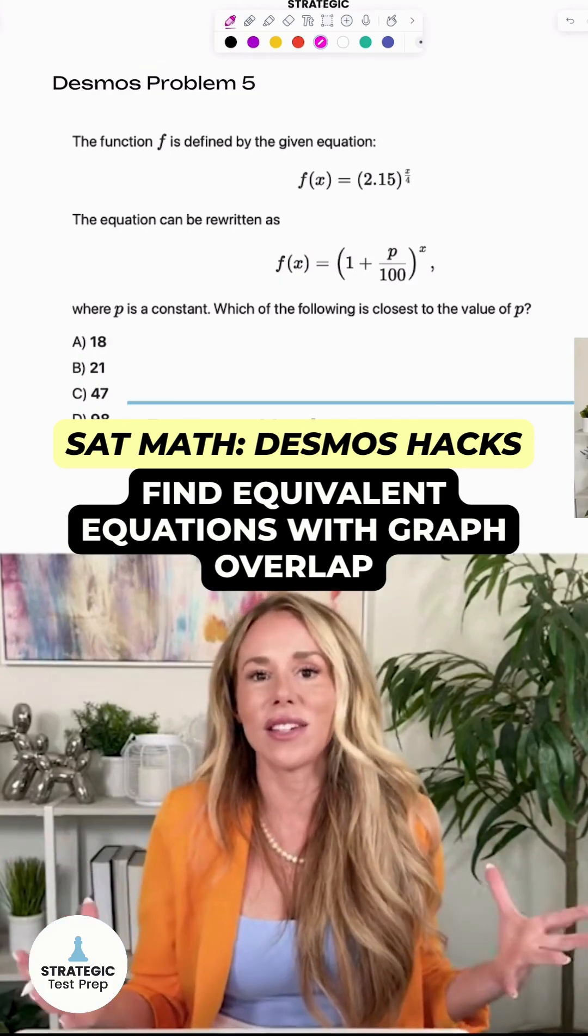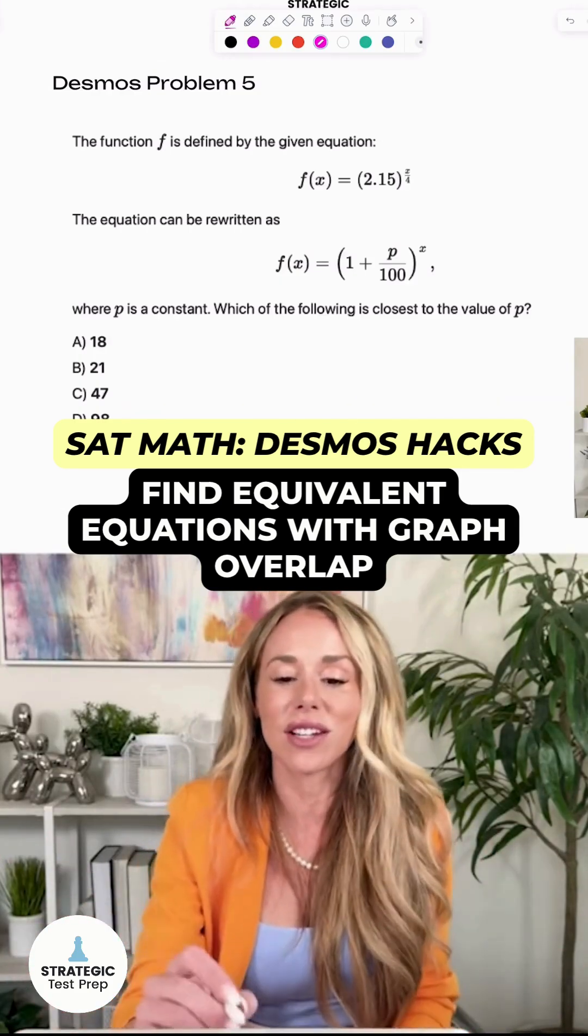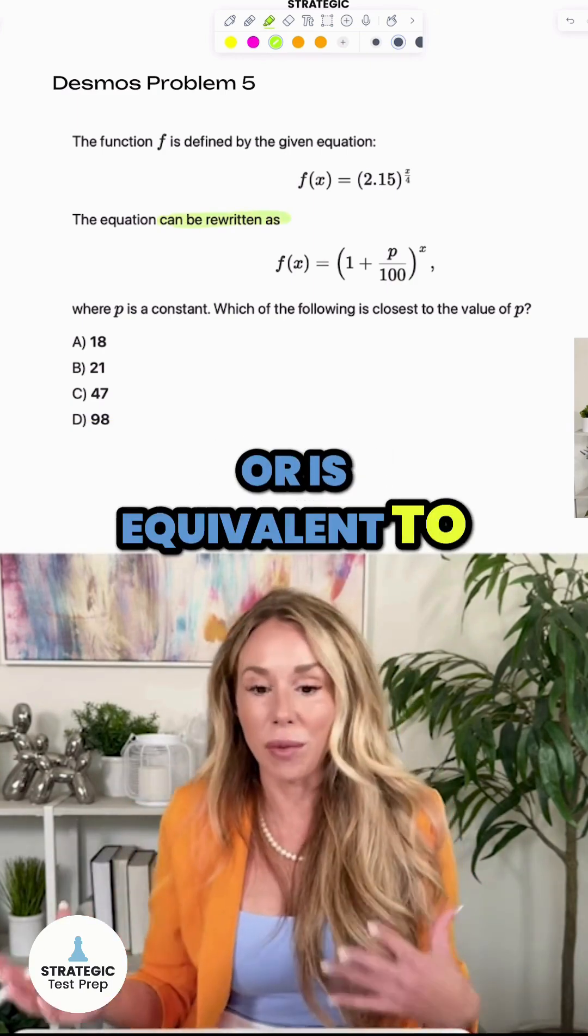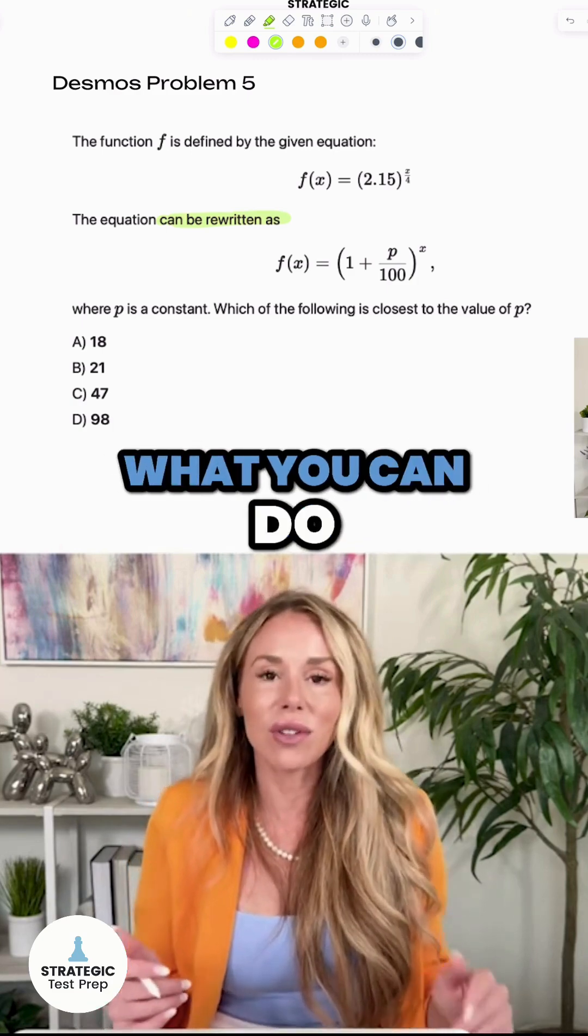All right, my fifth Desmos hack for you is to recognize when they give you two equations and they use language like can be rewritten as or is equivalent to. Because in these cases, what you can do is put